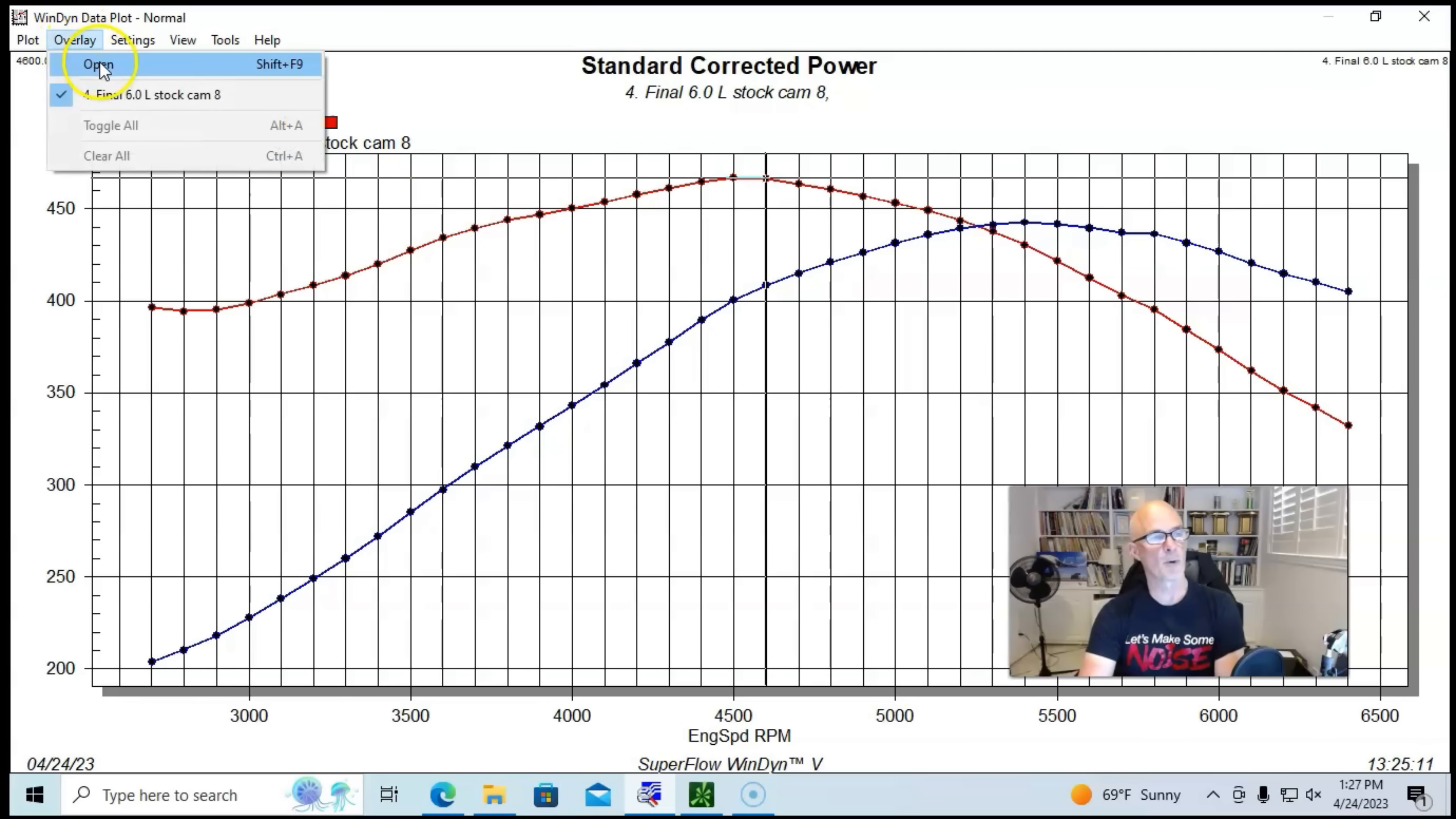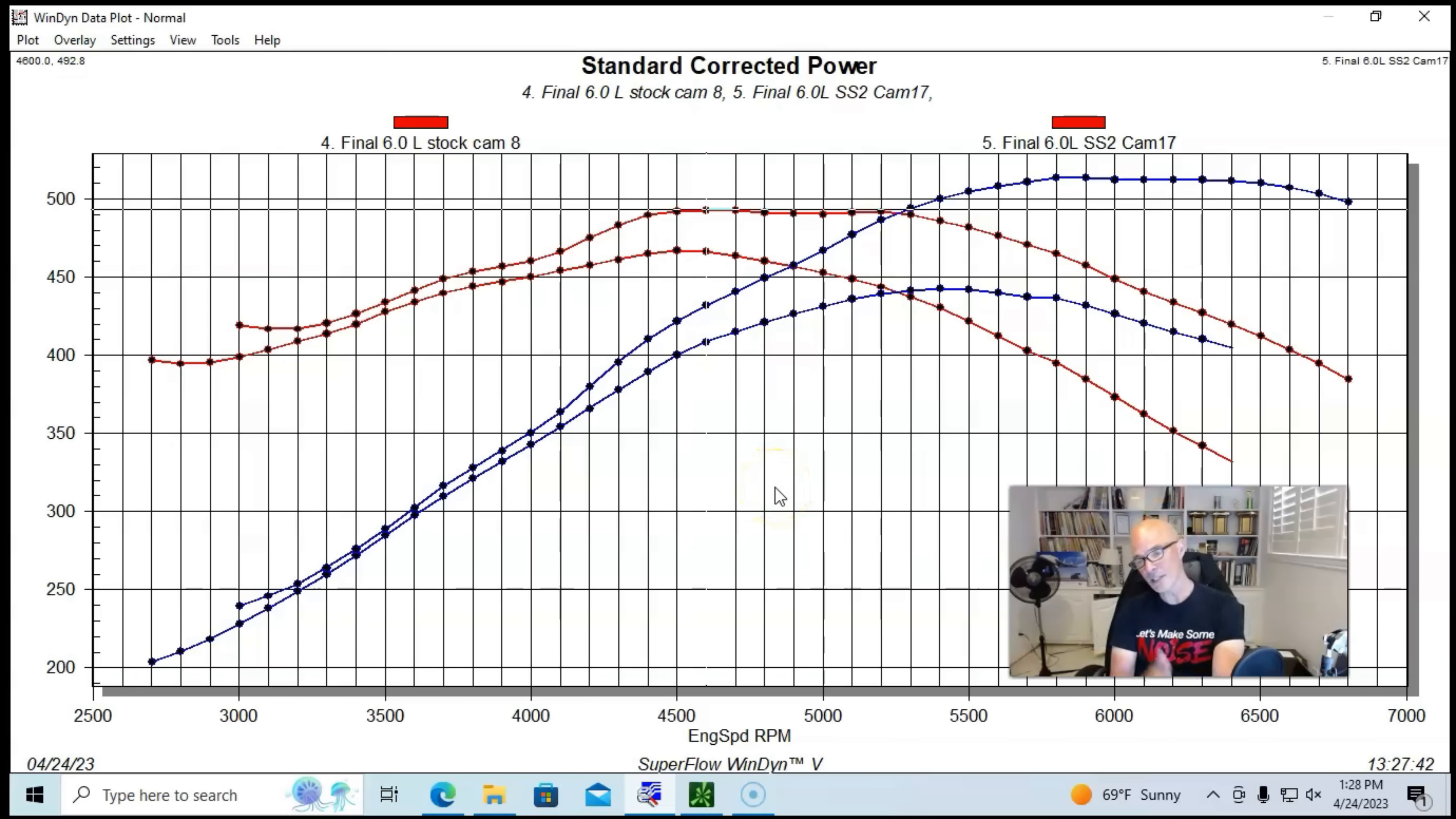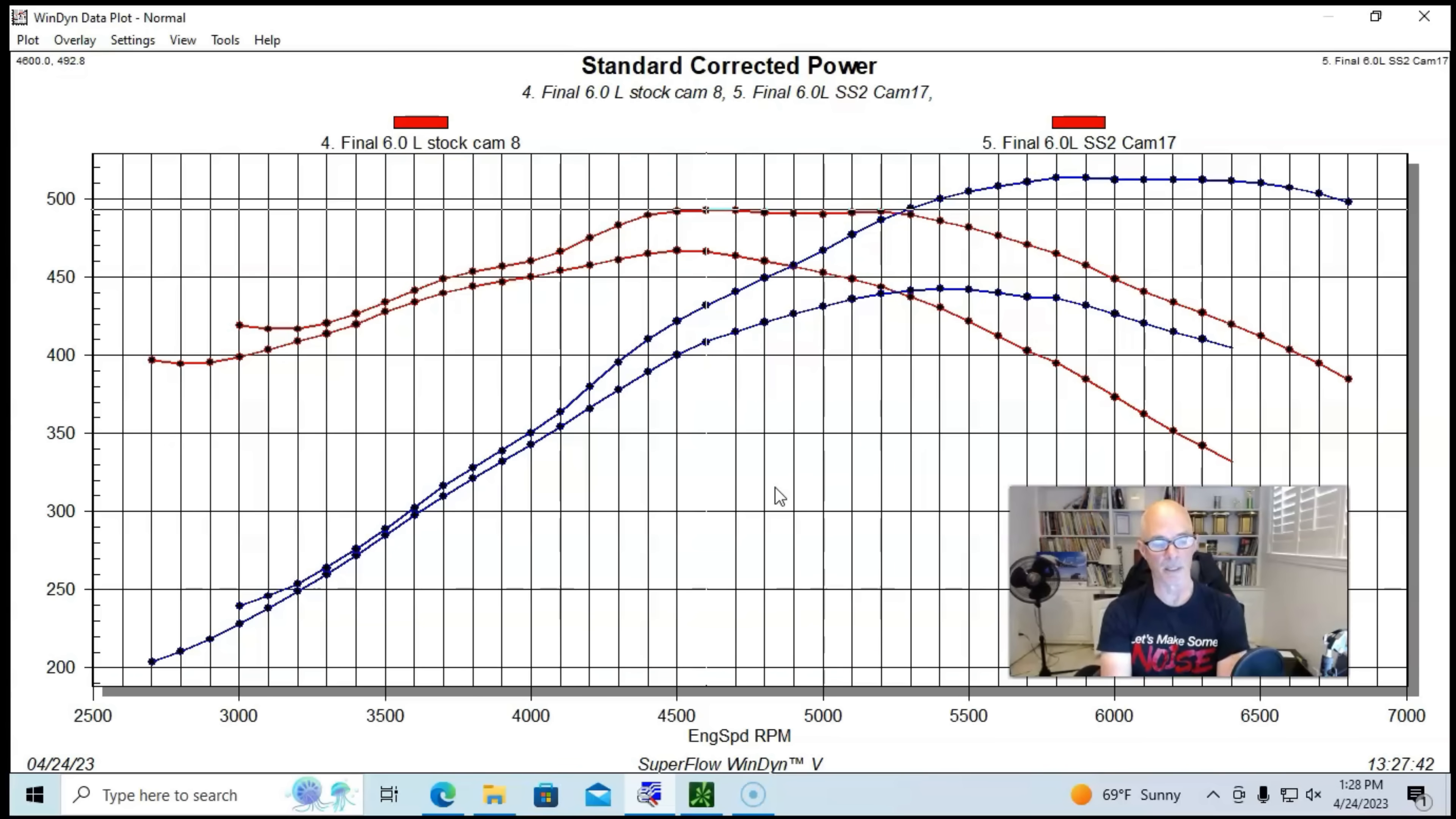So now let's find out what happened when we put our sloppy stage 2 camshaft in the 6 liter. You can see we got good gains. The sloppy stage 2 picked power up to 512 horsepower, so good power gains, and peak torque checked in at 493 foot-pounds of torque. So we saw gains of 71 horsepower and 36 foot-pounds of torque.